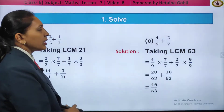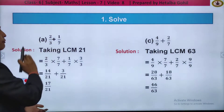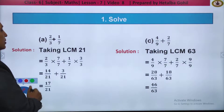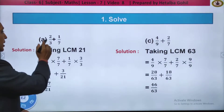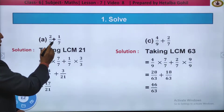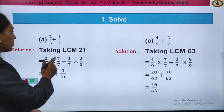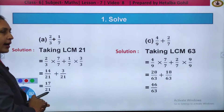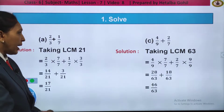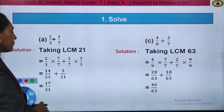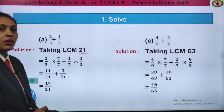The first question given to us is: solve the fractions. The first question is 2 by 3 plus 1 by 7. You can see these are unlike fractions, so we need to take LCM. The LCM we will get here is 21.